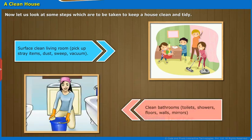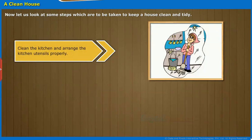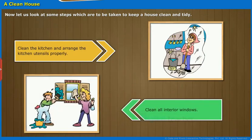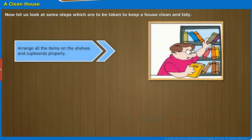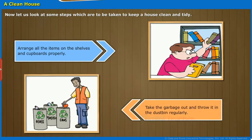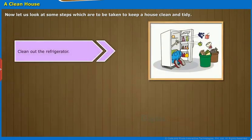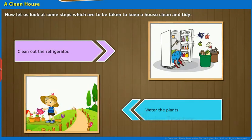Clean the kitchen and arrange the kitchen utensils properly. Clean all interior windows. Arrange all the items on the shelves and cupboards properly. Take the garbage out and throw it in the dustbin regularly. Clean out the refrigerator. Water the plants.